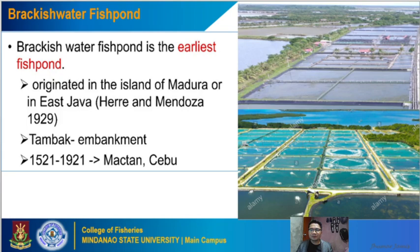The first type of culture system is the brackish water fish pond, which is the earliest fish pond — take note of that. It originated in the island of Madura in East Java, and was locally termed as tambak or embankment. It started in the Philippines way back from 1521 to 1921, beginning in Mactan, Cebu. These are aerial shots of the brackish water fish ponds in the Philippines.